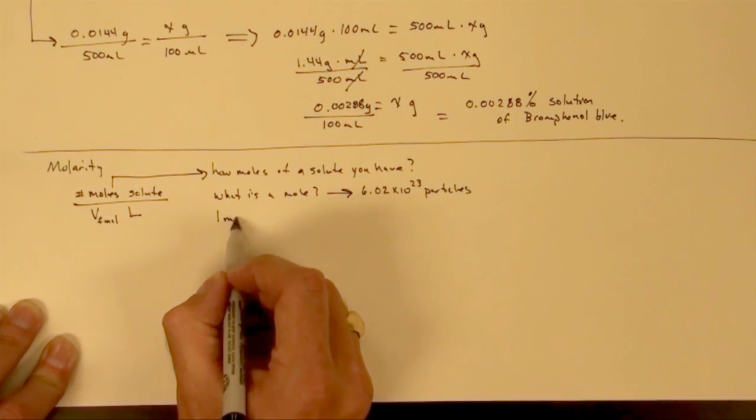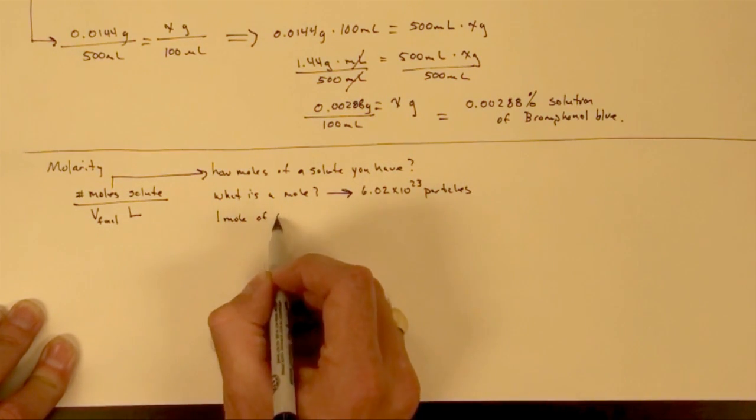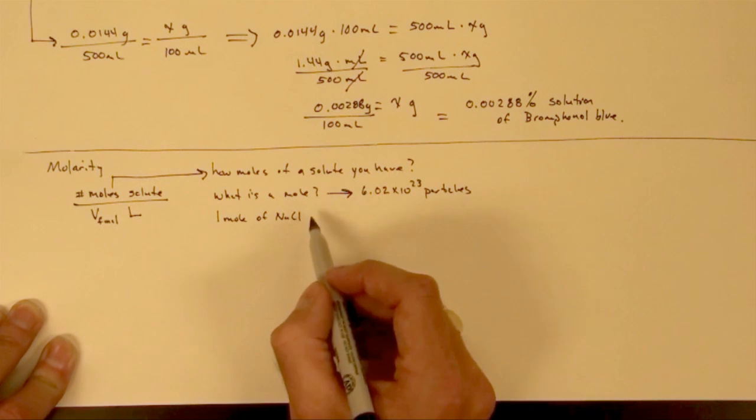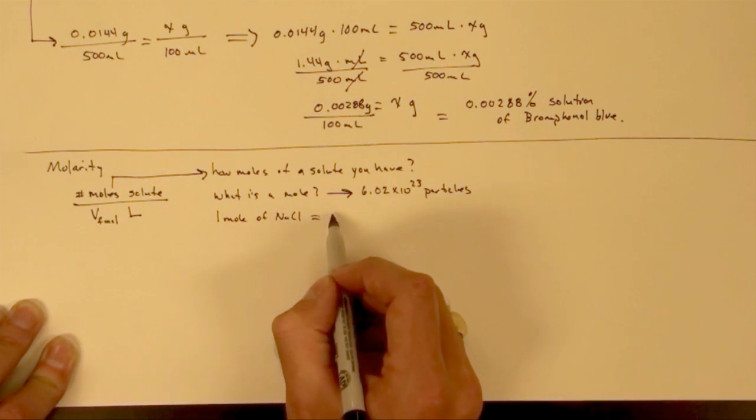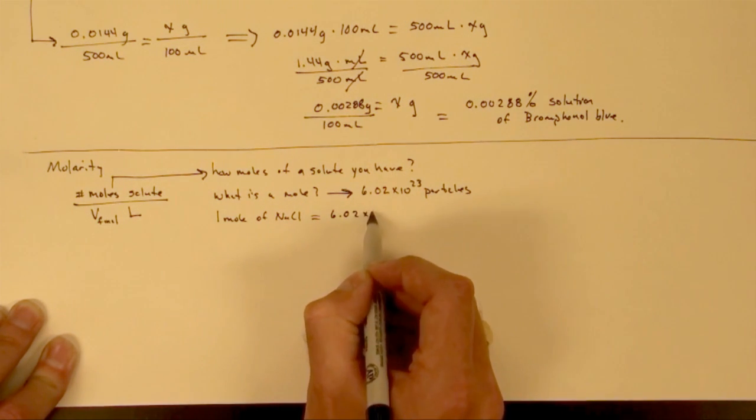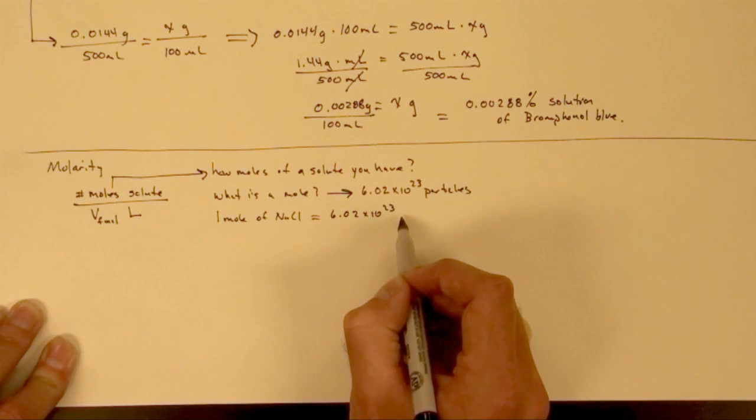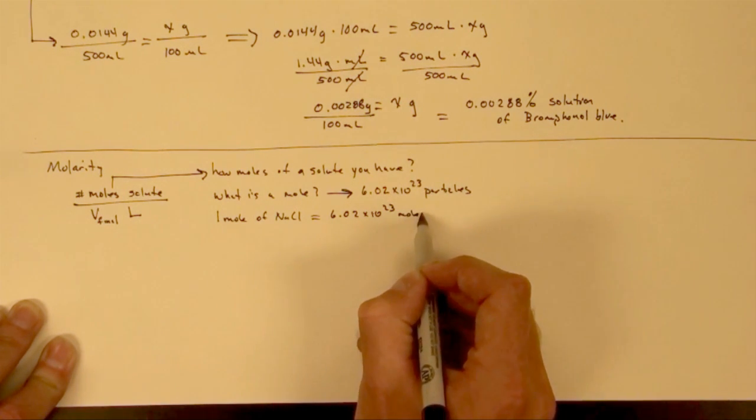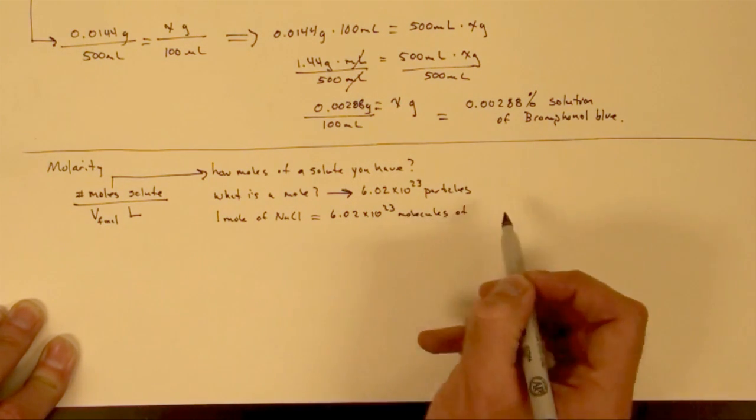So basically what that means is, if you have one mole of sodium chloride, you have 6.02 times 10 to the 23rd molecules of sodium chloride.